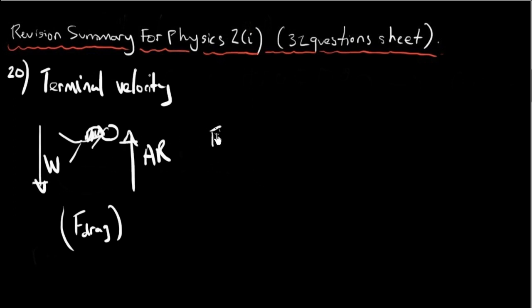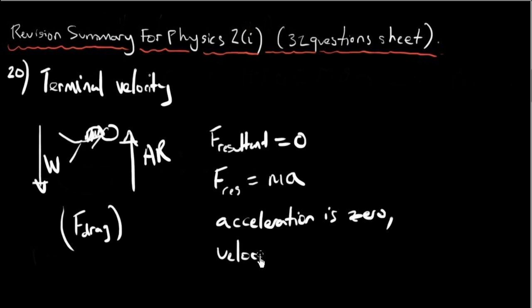the resultant force equals zero. And since the formula is net force or unbalanced force, the formula is resultant force F equals MA and the mass is not zero, then A has to be zero for that to be zero. So if A is zero, acceleration is zero, velocity is constant.